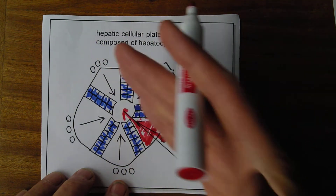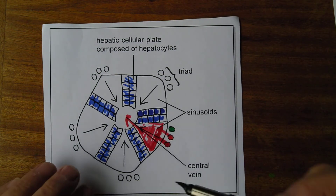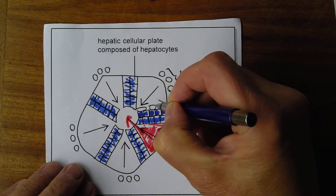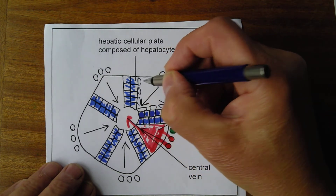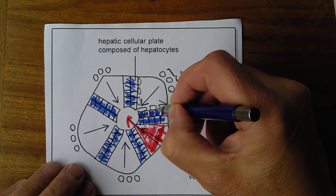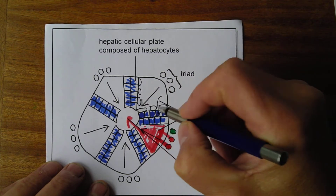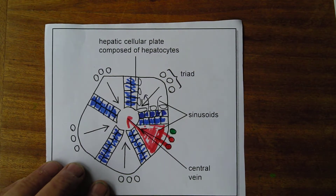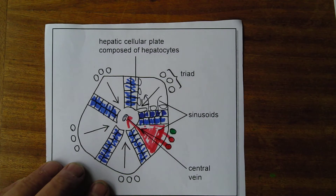As the blood goes through the sinusoid, the capillary walls have very large gaps between the individual capillaries — fenestrations — so blood components can get to the hepatocytes and exchange back into the blood. When the material has been processed, it drains into the central lobular vein.